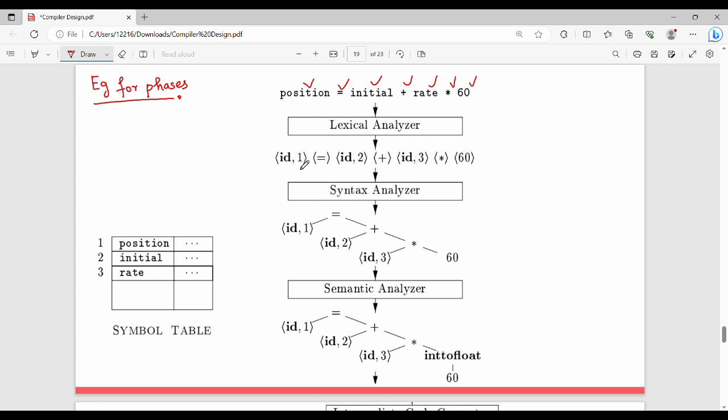Position is a token, equal to is a token, initial is a token, plus is a token, rate is a token, star is a token, 60 is a token.